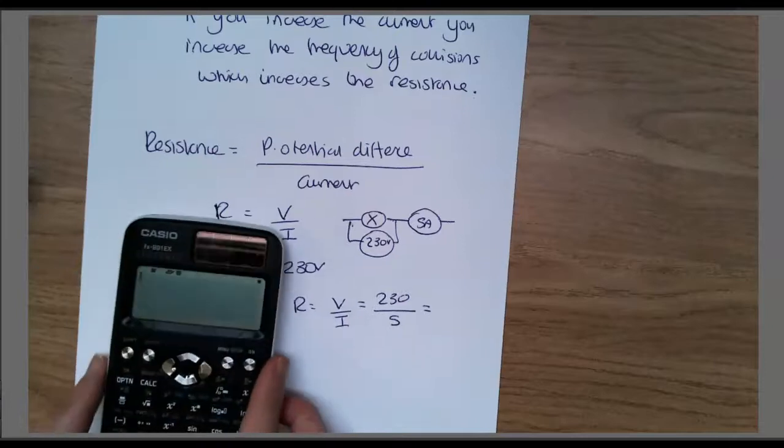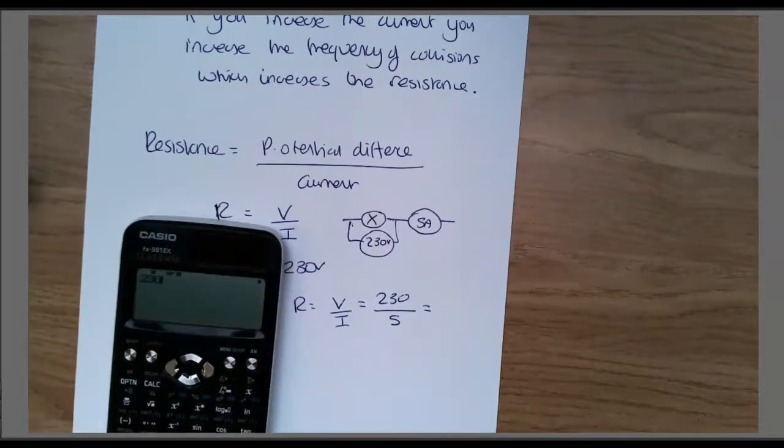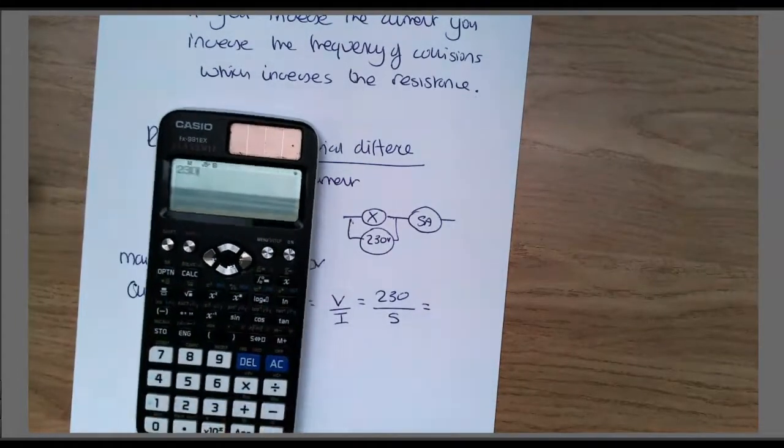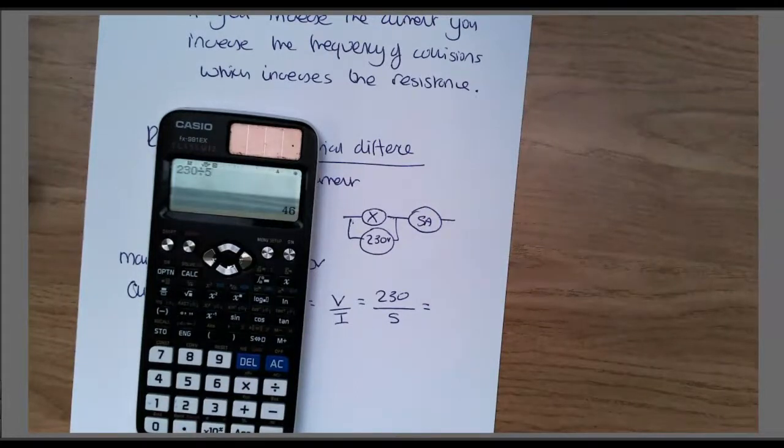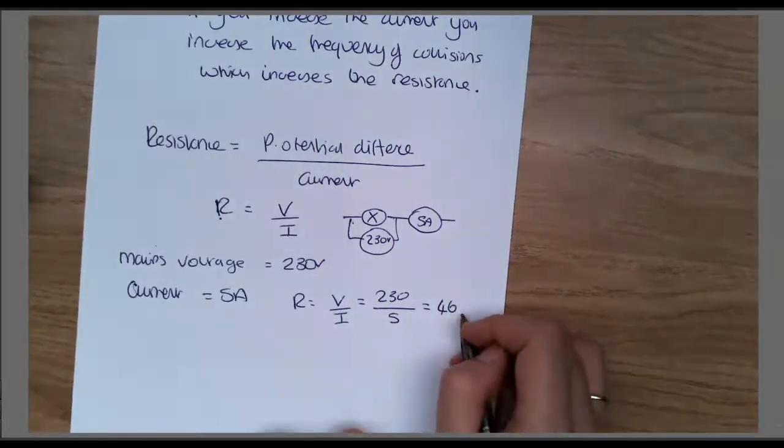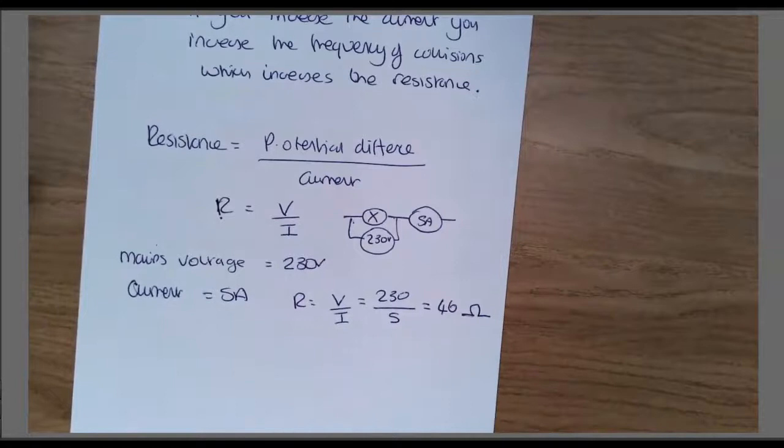So 230 divided by 5 will give you your answer. On your calculator, you're going to do 230 divided by 5 equals. It's 46, and the unit for resistance is ohms.